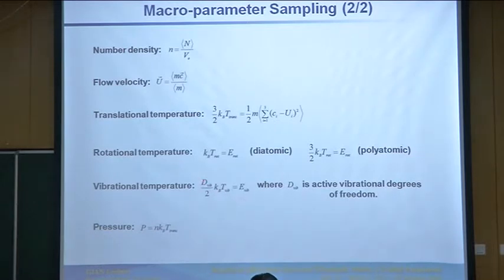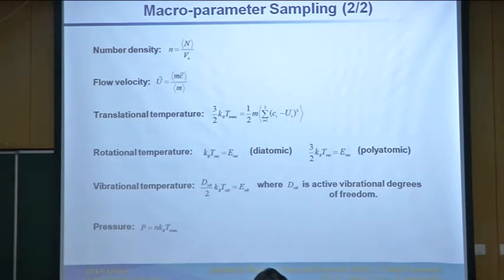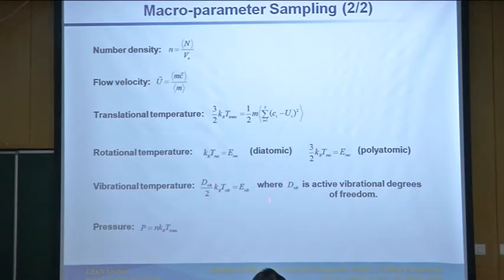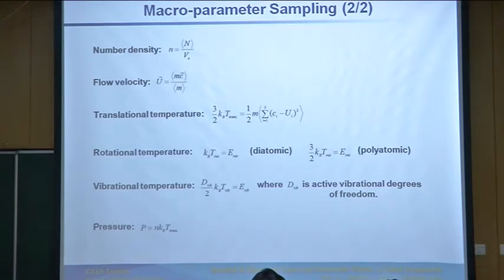For the vibrational mode, you need to know how many degrees of freedom are active. At low temperature you need not consider the vibrational mode, but at high temperature it can be fully excited, so the degrees of freedom for vibrational mode vary with temperature. This is a variable that must be determined in the DSMC method. From this data you can also recover pressure.